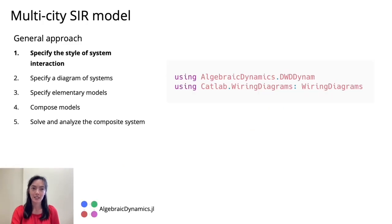The first step is to specify the style of system interaction. In AlgebraicDynamics, we've implemented two distinct styles. The first is undirected and often corresponds to natural systems, such as composing chemical reaction networks or ecosystem models. The second style of system interaction is directed and often used in more engineering contexts.